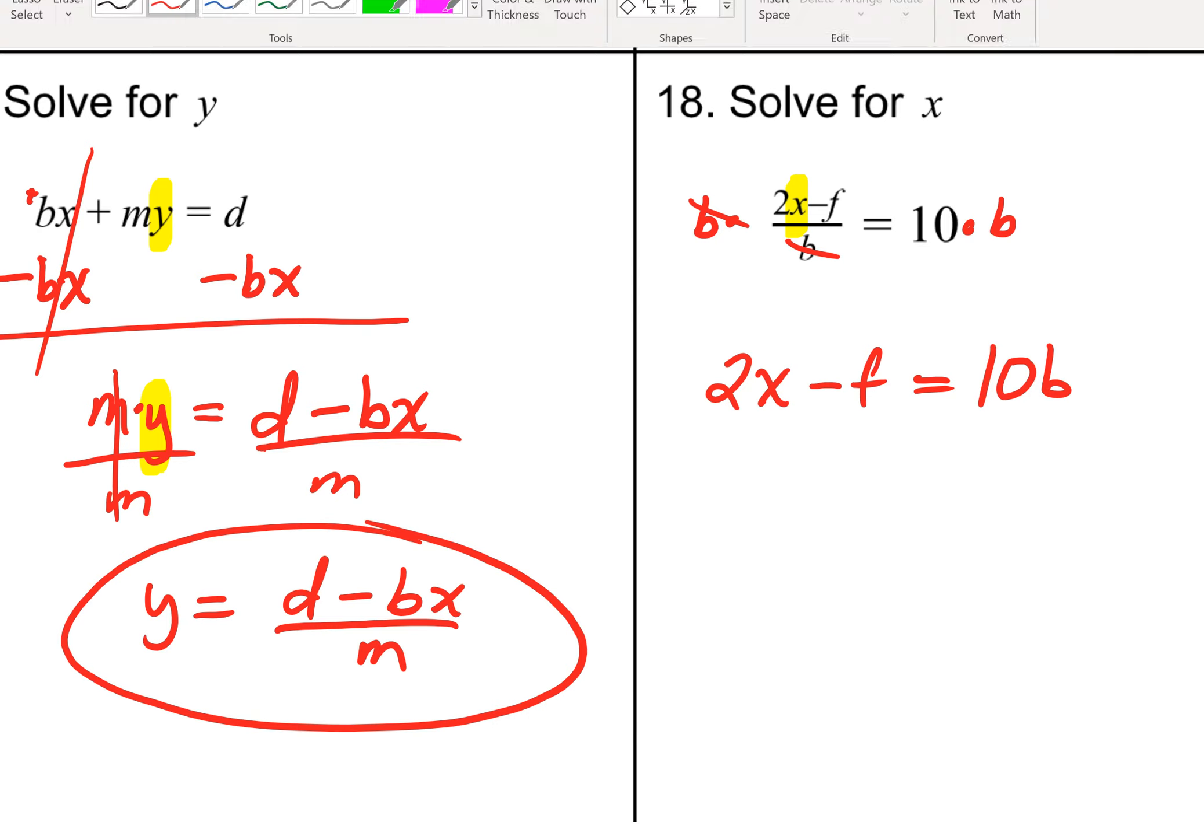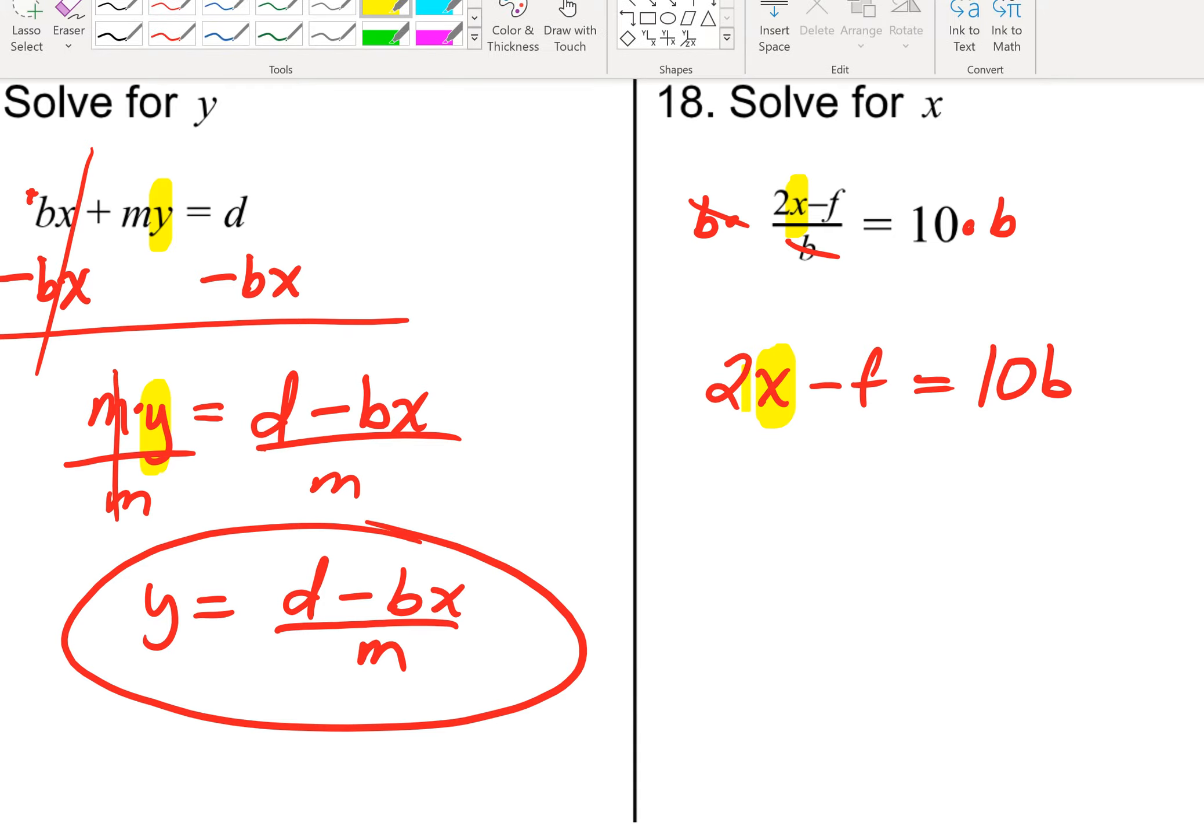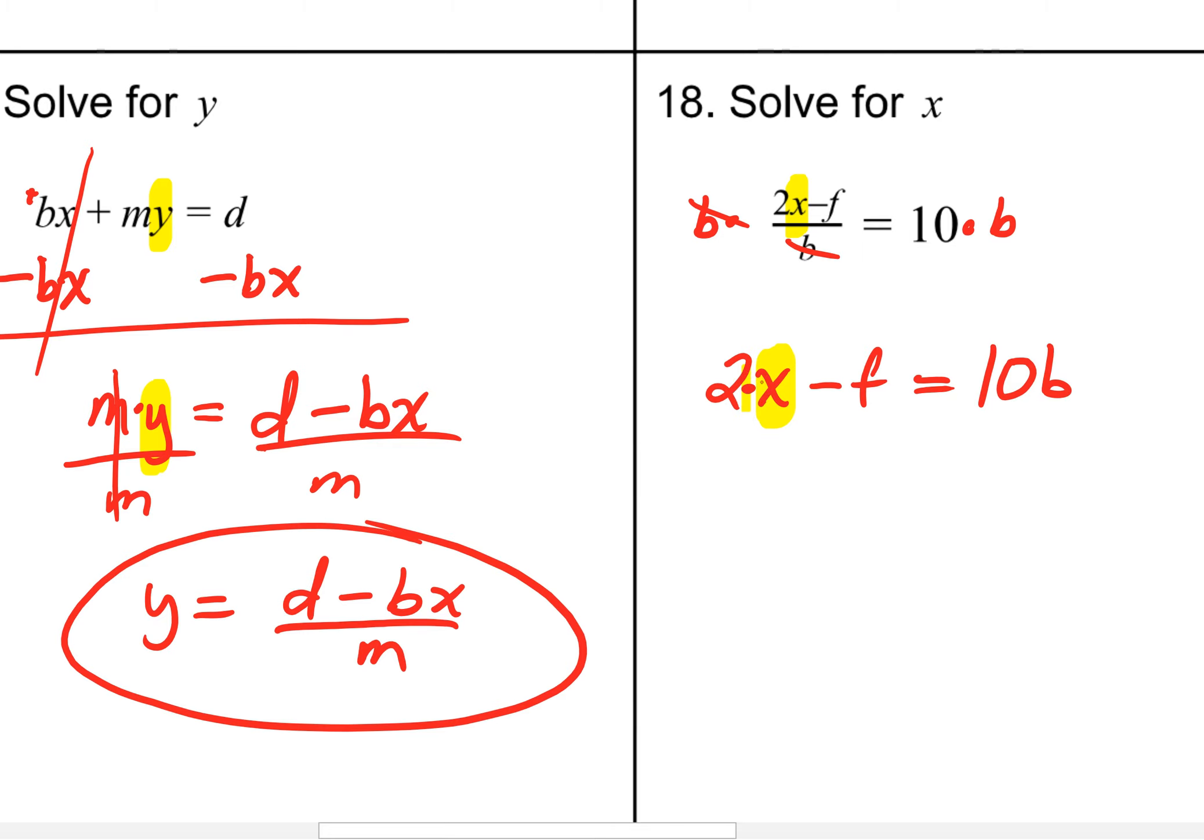We will have 2x minus f. And right here, we'll have a 10b. Well, things are looking better, for sure. On the left-hand side right now, we have 2x minus f. There are two things happening to x. x is being multiplied by 2, but it's also being subtracted by f. Remember, you want to deal with that addition or subtraction in doing the inverse operation. Minus f, as you're looking at that, you could say, what's the opposite of subtracting f? Well, we can add an f.